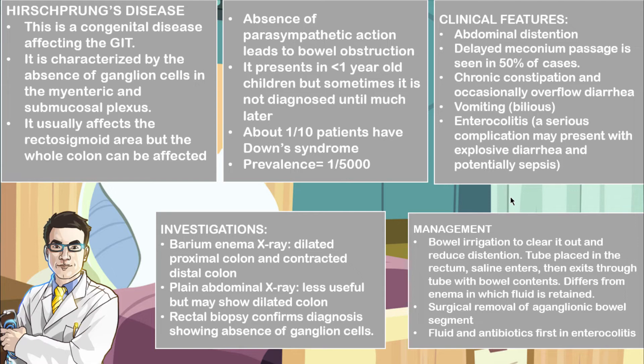The only problem comes when a large portion of the segment is aganglionic, meaning you'll have to resect a very large portion, which may lead to complications later in life such as malabsorption and short gut syndrome. In individuals with enterocolitis, you want to first start on fluids as well as antibiotics.